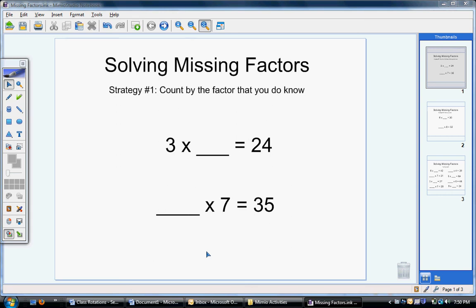Today we're going to work on some problems where we're trying to find the missing factor. When you have a multiplication problem, the two numbers that you are multiplying together are called the factors. The answer is called the product. Usually in a multiplication problem, you know the two factors and you're trying to find the product.